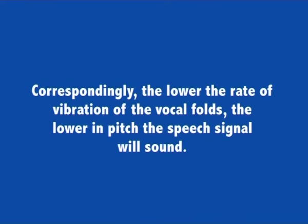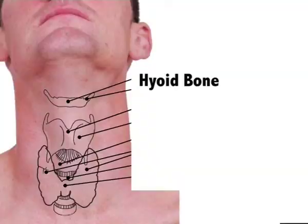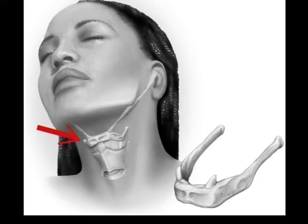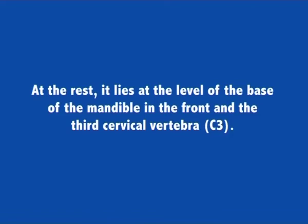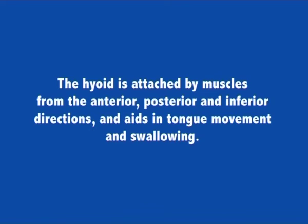The lower the rate of vibration of the vocal folds, the lower the pitch the speech signal will sound. We now come to the other parts of speech organs — the hyoid bone. The hyoid bone is a horseshoe-shaped bone situated in the anterior midline of the neck between the chin and the thyroid cartilage. At rest, it lies at the level of the base of the mandible in front and the third cervical vertebra, C3. The hyoid is attached by muscles from the anterior, posterior and inferior directions and aids in tongue movement and swallowing. The hyoid bone provides attachment to the muscles of the floor of the mouth and the tongue above, the larynx below, and the epiglottis and to the pharynx from behind.